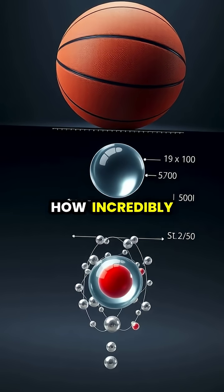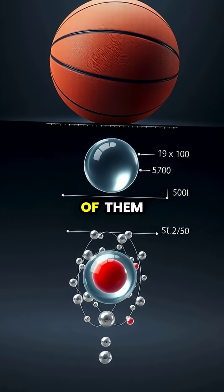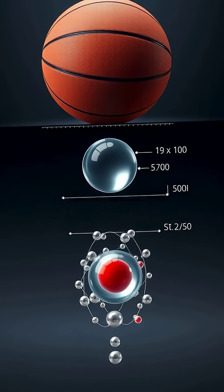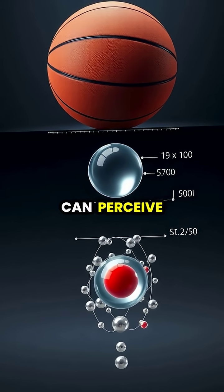To grasp how incredibly tiny atoms are, consider that millions of them could fit across the width of a human hair, making them far beyond what our eyes can perceive.